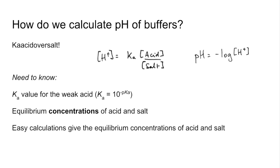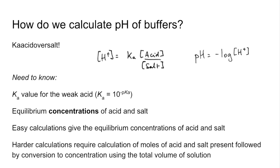An easy question would give you the equilibrium concentrations of the acid and salt and the Ka value. More difficult calculations would get you to calculate the moles of acid and salt present after an excess of a weak acid and a base had reacted and then once you've got the moles you'd need to convert them into concentrations in moles per decimeter cubed using the total volume of the solution. Once you know those it goes into the Casadova salt equation and then minus log to get pH.